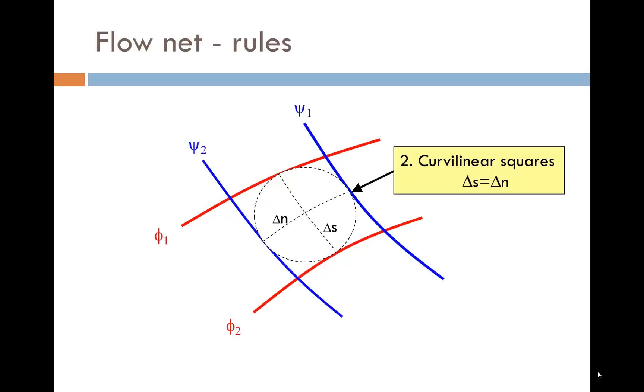Number 2: The flow lines and equipotential lines must form what are called curvilinear squares. In other words, the average dimensions delta S and delta N should be the same.